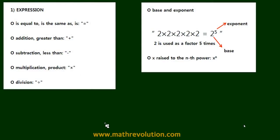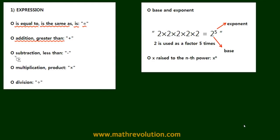In this video, we're going to go over some frequently used expressions on the GMAT math. 'Is equal to,' 'is the same as,' or 'is' can be translated into the equals sign. Addition or 'greater than' means plus, subtraction or 'less than' means minus. Multiplication and 'product' means times, and division means you divide that number.